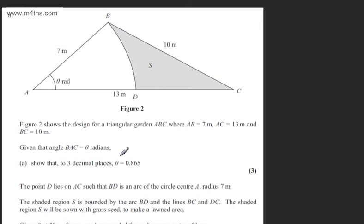This is question 8. We're told figure 2 shows the design for a triangular garden ABC where AB equals 7 metres, AC equals 13 metres and BC equals 10 metres. Given that angle BAC equals theta radians, in part 8a we need to show that to three decimal places theta is equal to 0.865.